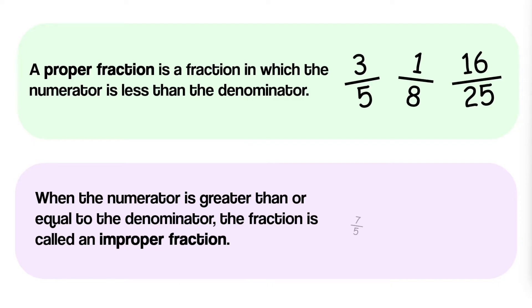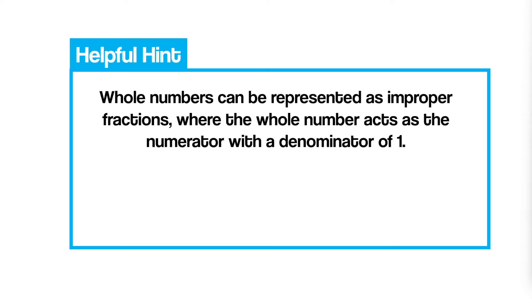They are top-heavy fractions like seven-fifths, six-sixths, and thirty-elevenths. Whole numbers can be represented as improper fractions, where the whole number acts as the numerator with a denominator of one. For example, five can be written as five over one, and they represent the same value.